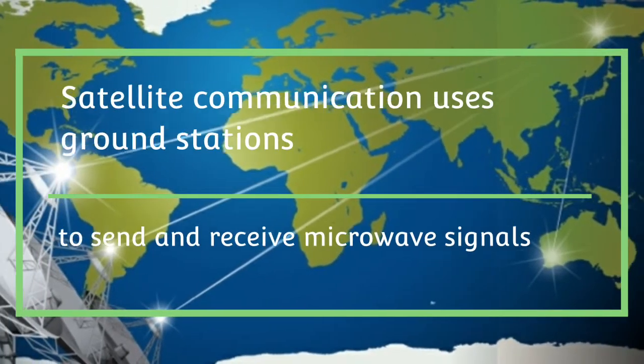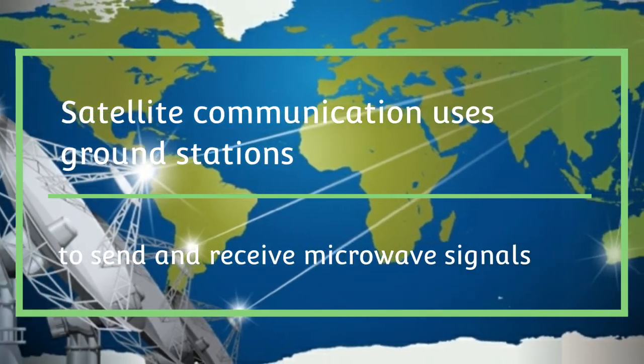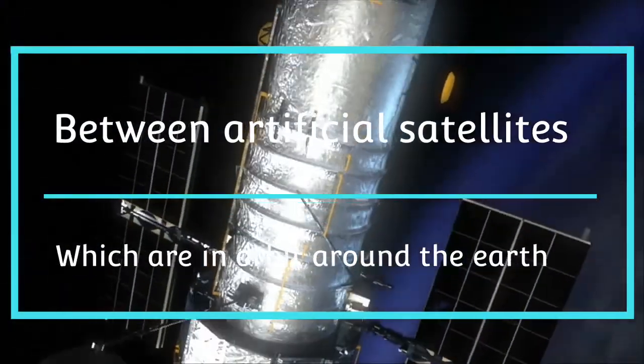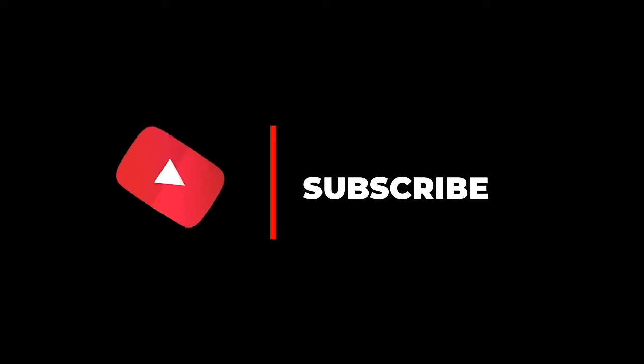Satellite communication uses ground stations to send and receive microwave signals between artificial satellites which are in orbit around the Earth. That's all for today.